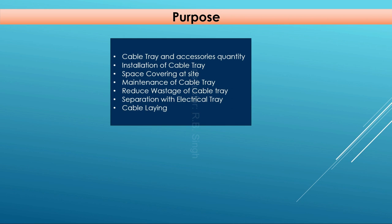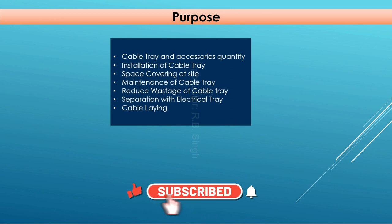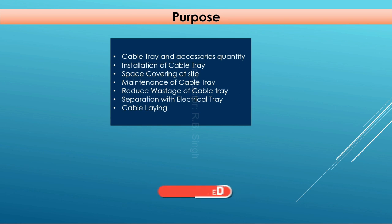Another purpose is space covering at site. There are different stages of cable tray layouts, and since the electrical engineer and pipe engineer also work on the plant, if we do not cover the space early, at the time of installation we may find no space or routing available for the cable tray. During detail engineering, if we make the cable tray layout, we can cover the route and space so that there will be no problems during installation at site.